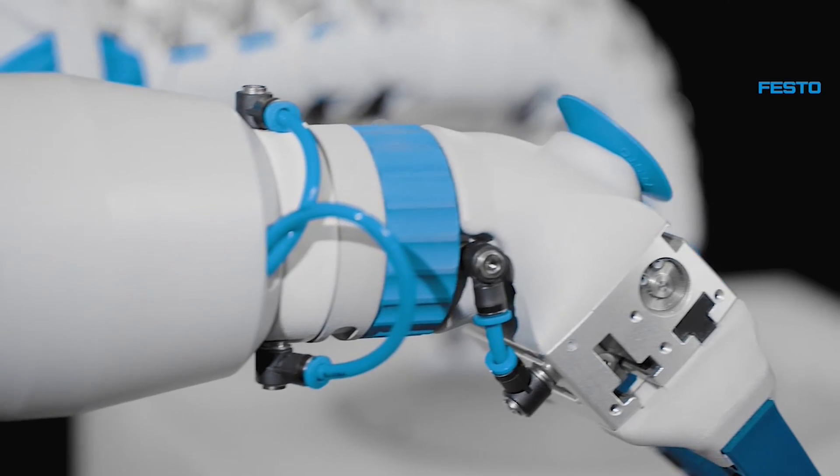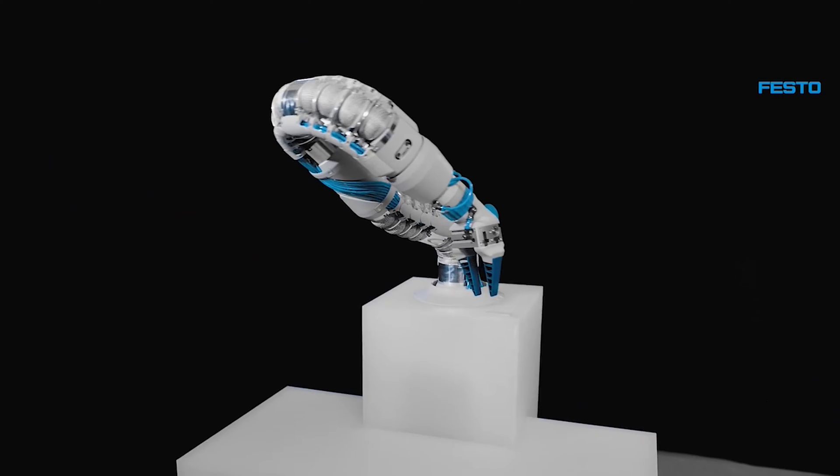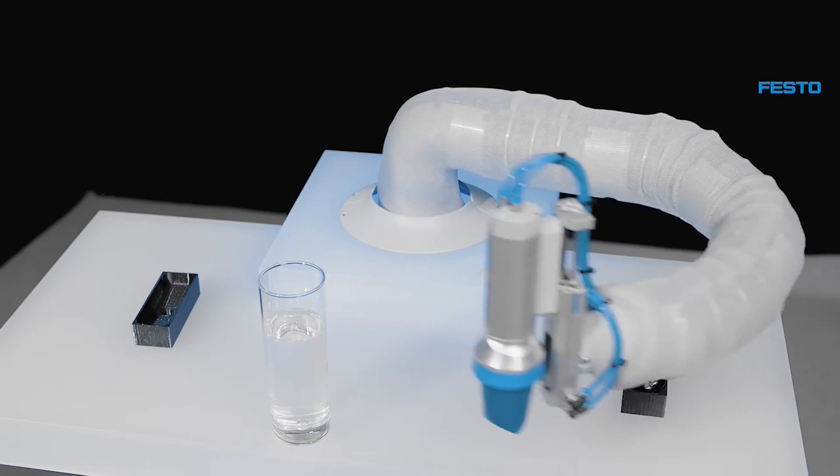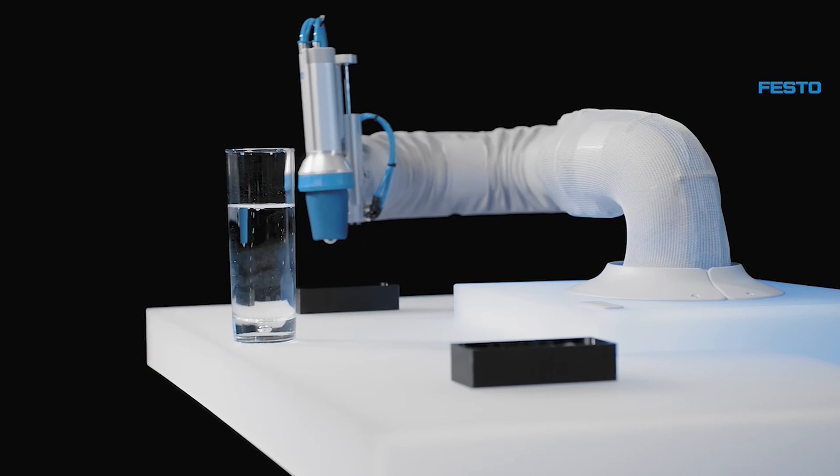Depending on the requirements, the length of the Bionic Soft Arm can be varied, with up to seven pneumatic actuators. This allows the Bionic Soft Arm to work around obstacles even in the tightest of spaces.